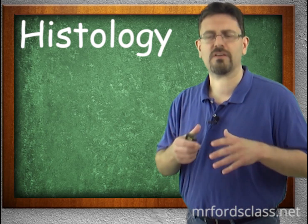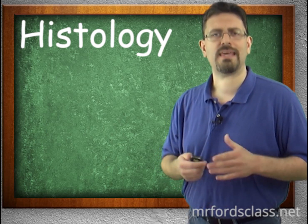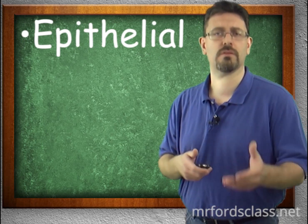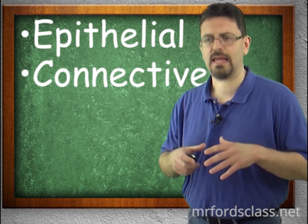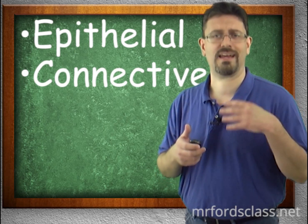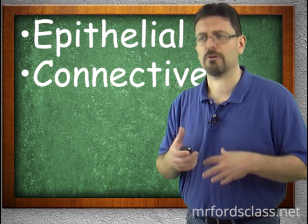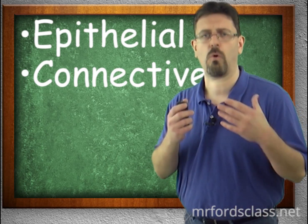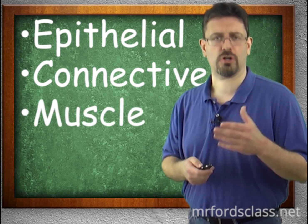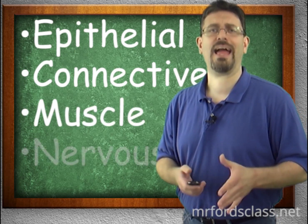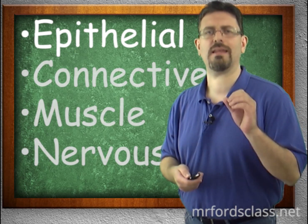There are four basic families of tissues in histology. We look at epithelial tissue, which is the topic of this video and the next couple of videos. Connective tissue is a catch-all for a whole bunch of things — bone, blood, collagen fibers, elastic fibers, fibroblasts. Then we have muscles — skeletal, smooth, and cardiac — and nervous tissue. Right now we're focusing on epithelial tissues.